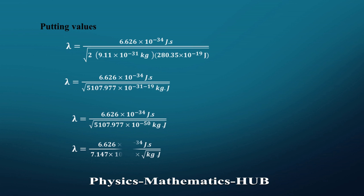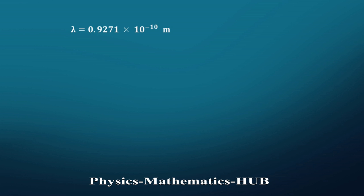Taking the square root, we get 7.147 × 10⁻²⁴. And finally, λ = 0.9271 × 10⁻¹⁰ meters.